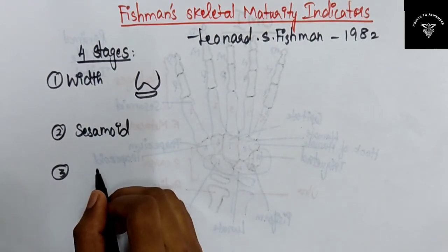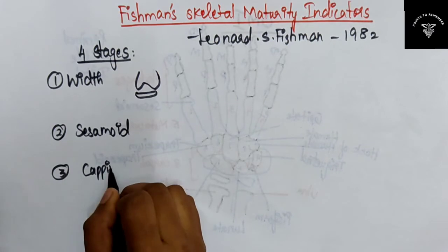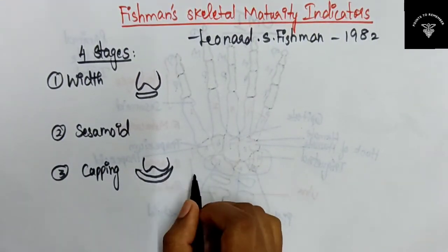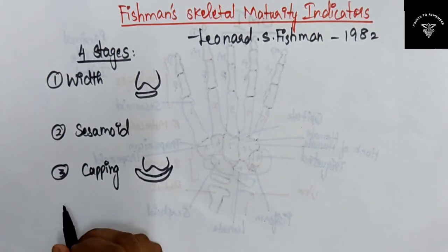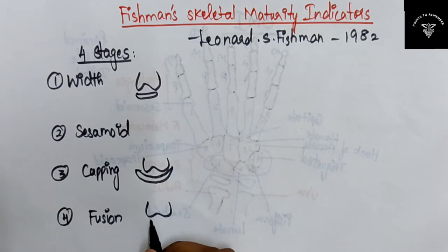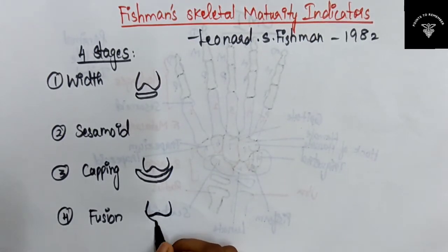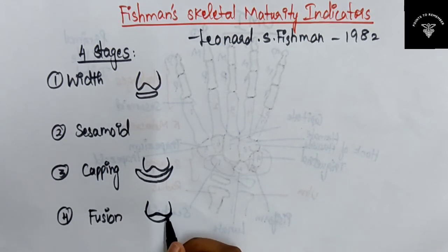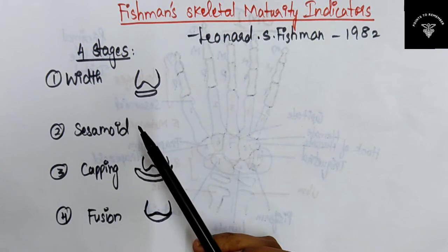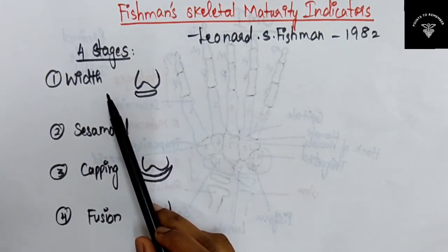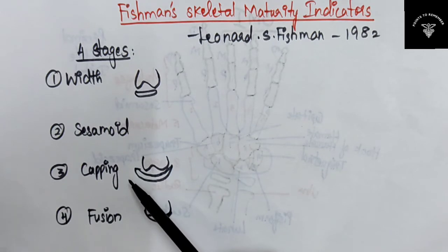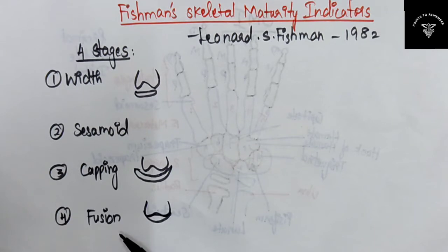The third stage is capping of the epiphysis — where the epiphysis caps the diaphysis. The fourth stage is fusion of the epiphysis and diaphysis. So these four stages are: equal width of epiphysis and diaphysis, appearance of adductor sesamoid of the thumb, capping of epiphysis, and fusion of epiphysis and diaphysis.